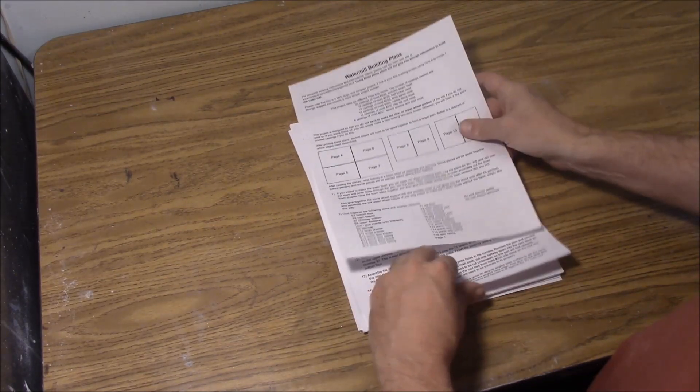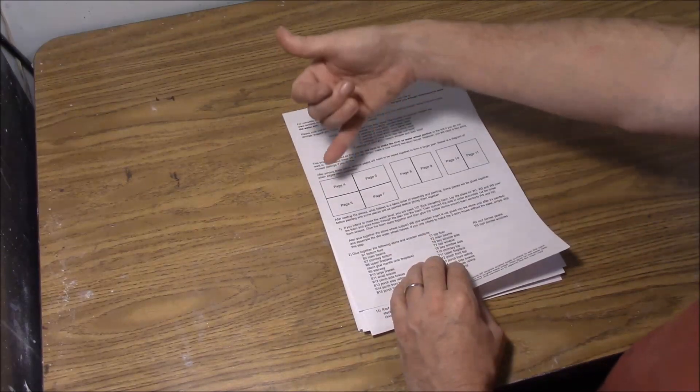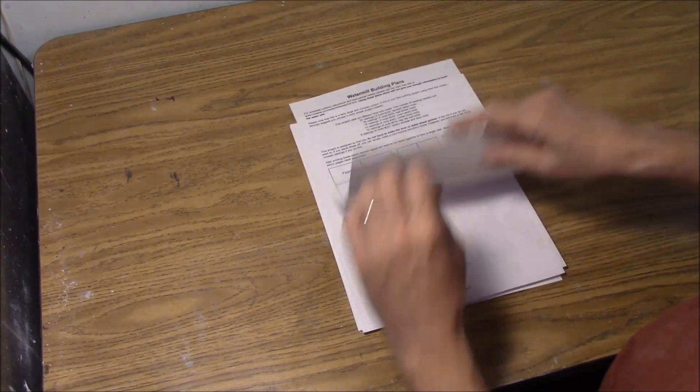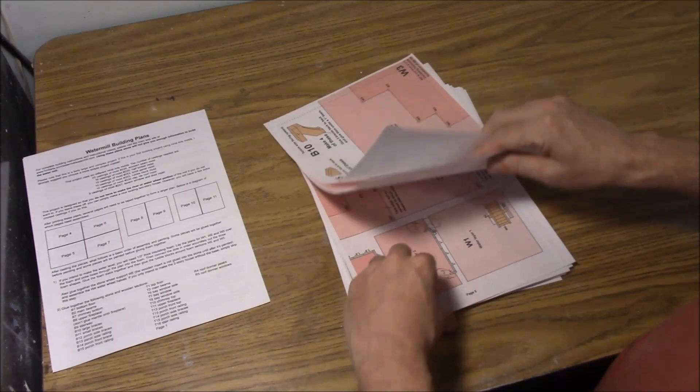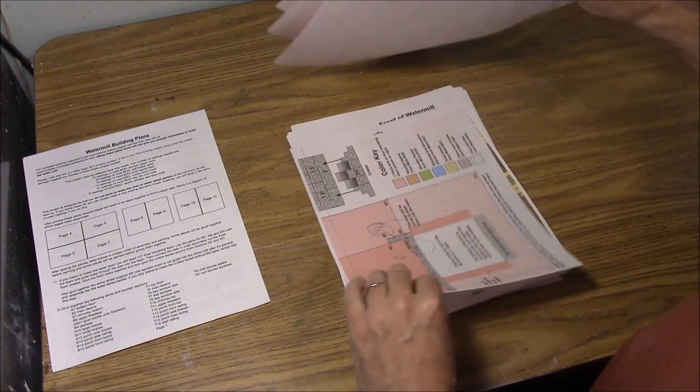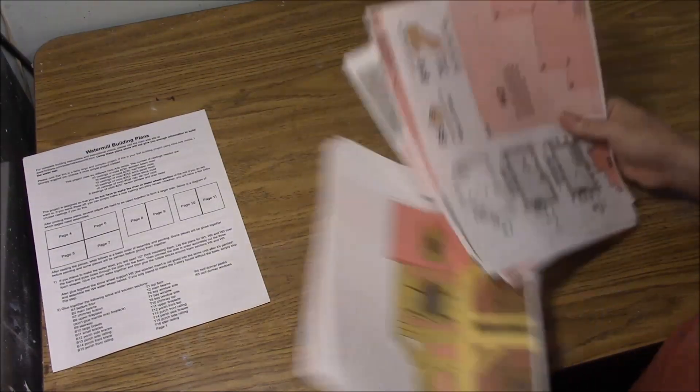Let's start with the first one. It says to assemble pages 4, 5, 6, and 7. Well, let's find those, and let's see what we can do. Okay, here's page 4, here's page 5, page 6, and page 7. Okay, we're going to set the rest aside.